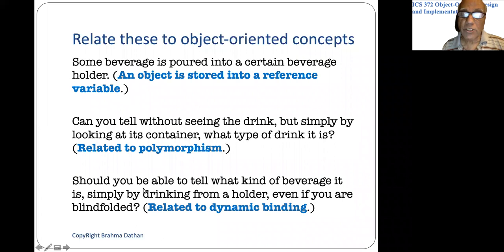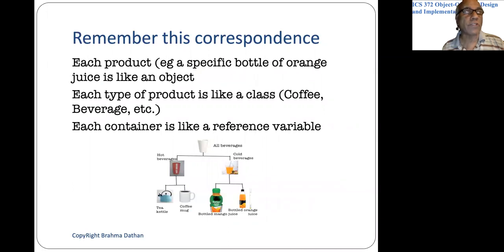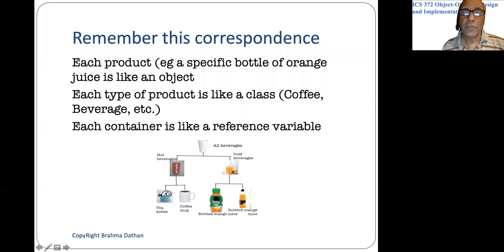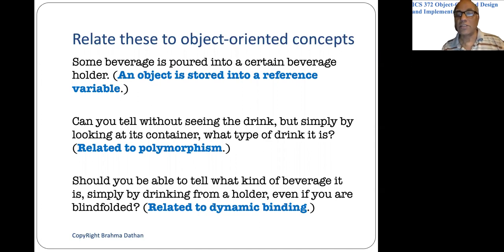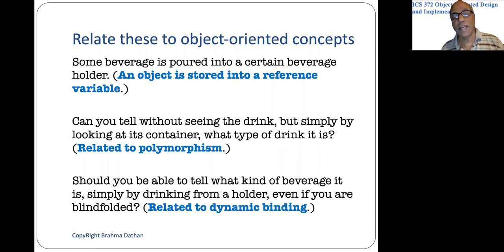Would you be able to tell what kind of beverage it is simply by drinking from a holder, even if you are blindfolded? Supposing you knew how all these drinks tasted — how tea tasted, how coffee tasted, how mango juice and orange juice tasted. If you are given a cup and you are blindfolded and you drink it, would you be able to tell what type of beverage it is? Of course, yes. This is more like dynamic binding: even if you don't know what the type of an object is, from the method that gets called you can gather what the actual type is. There are fine differences, but for the most part the analogy holds.